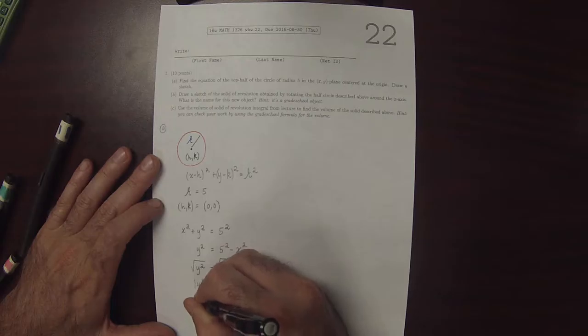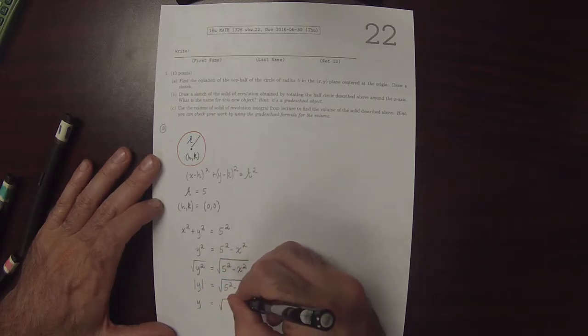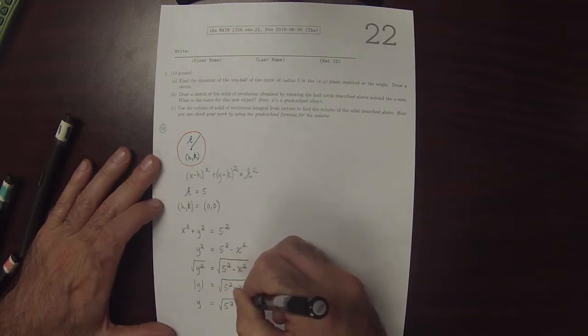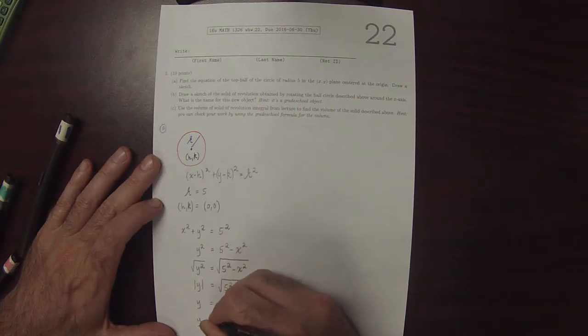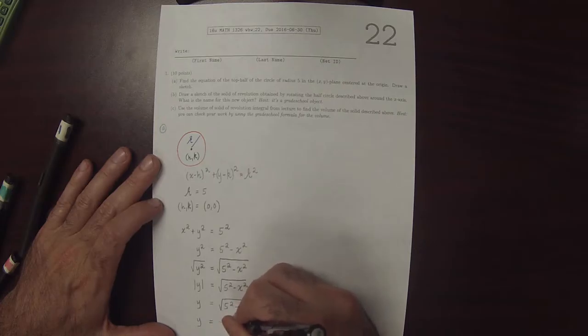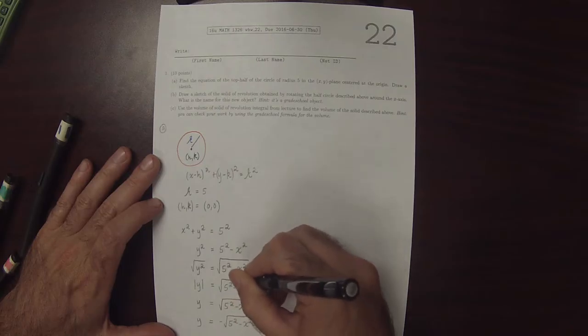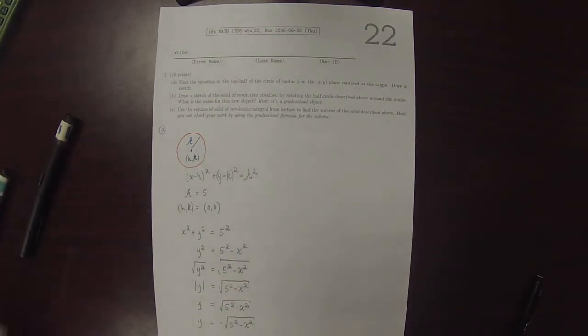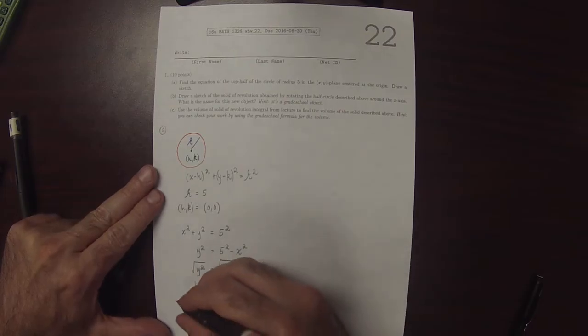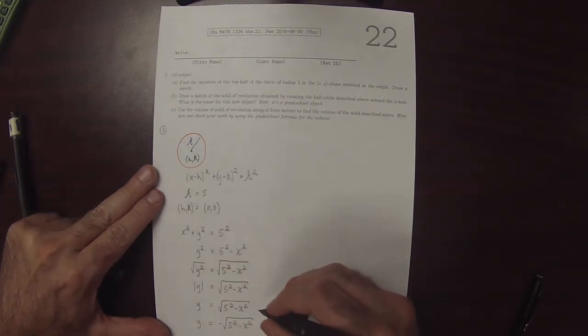So there is y equals square root of 5 squared minus x squared, and there is y equals negative square root of 5 squared minus x squared. And these two are the top and bottom halves of the circle, respectively. So this one is the top half of the circle, and this one is the bottom half.